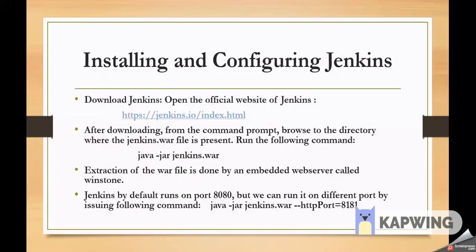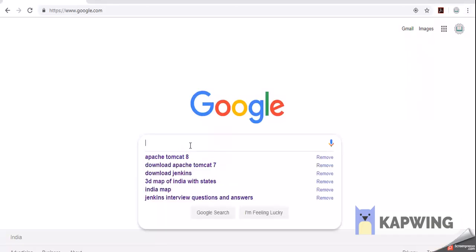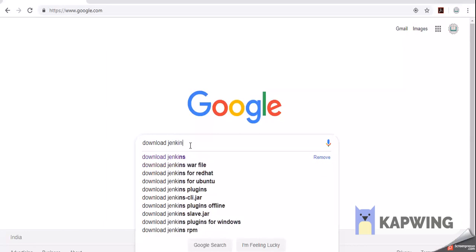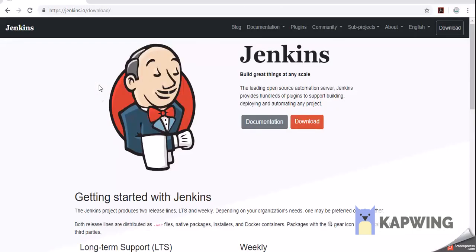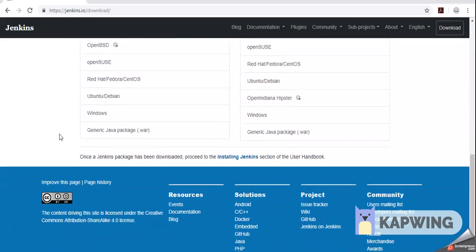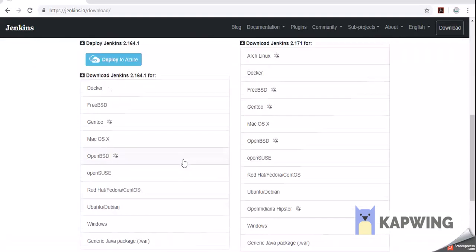Now let's understand how we can install Jenkins. First, download the Jenkins tool. After that, we will start the Jenkins server using a Java command, then we can access the Jenkins home page. To download Jenkins, go to the browser and type 'download Jenkins' — the first link from the jenkins.io website. Here we can see options for which operating system to download Jenkins. I am going for version 2.164.1 which is a stable version.